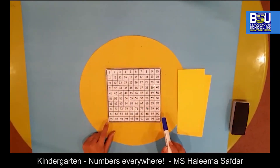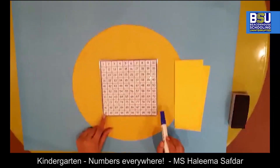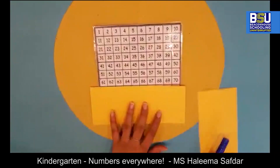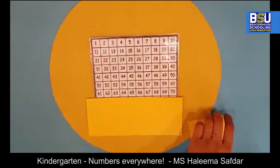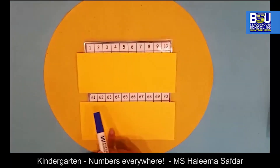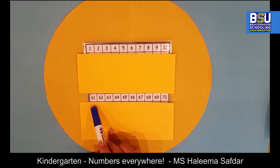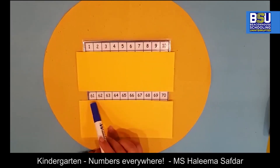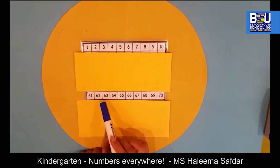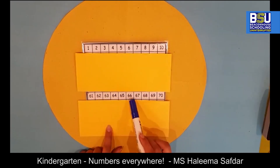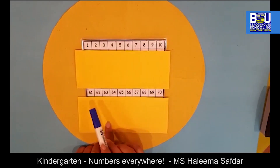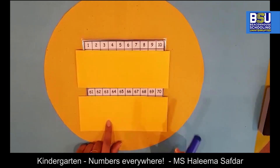While moving in rows, the ones keep on increasing. For example, the number on the ones side will keep on increasing: 1, 2, 3, 4, 5, 6, 7, 8, 9, following a 1 to 9 pattern.